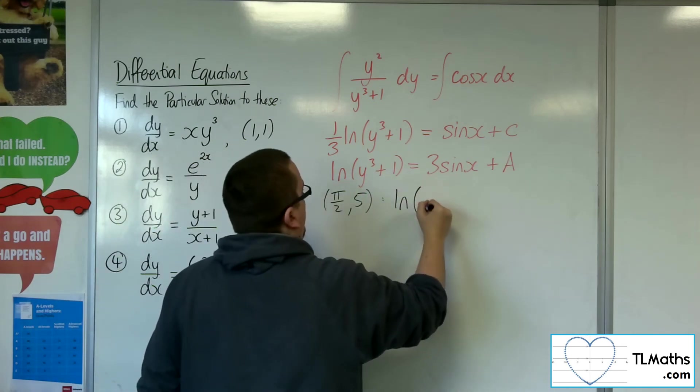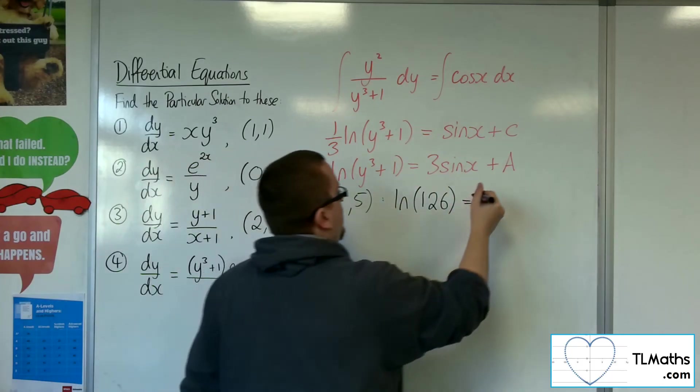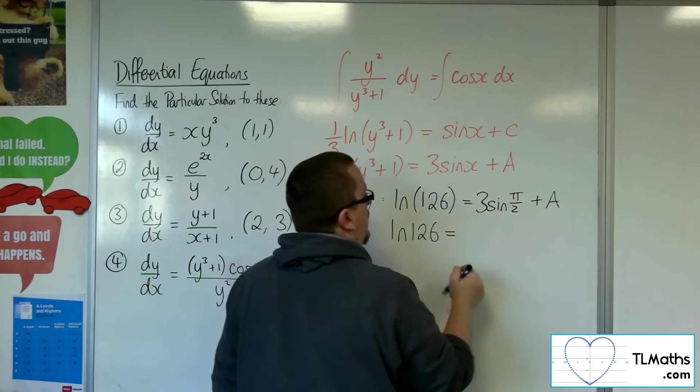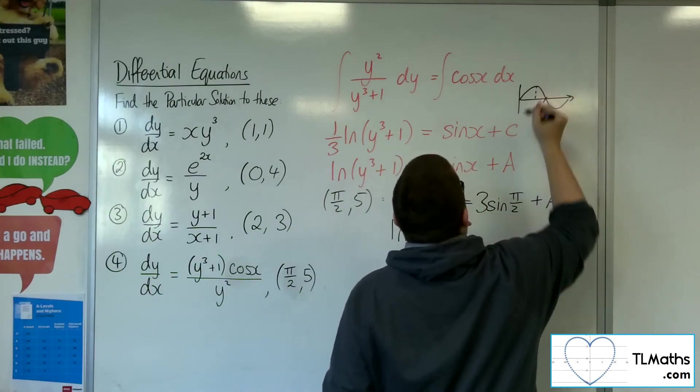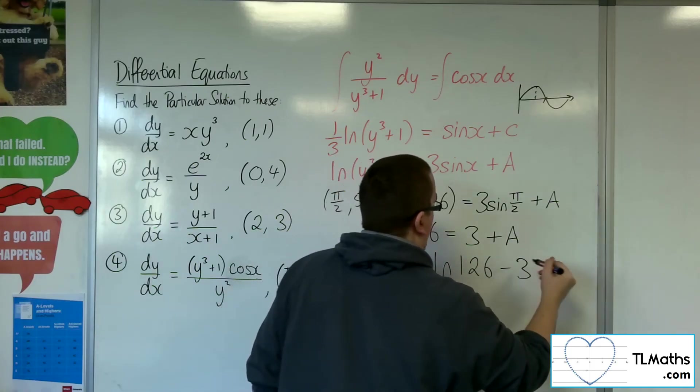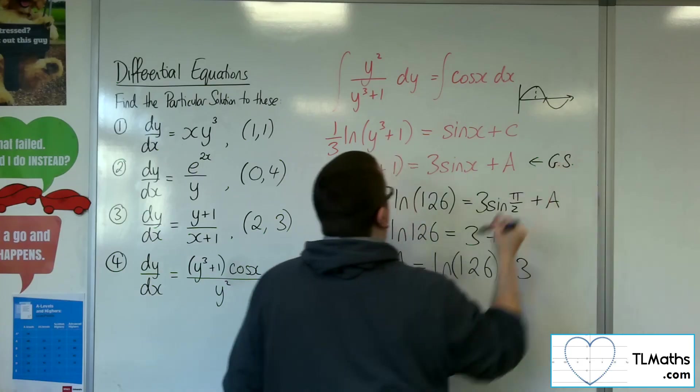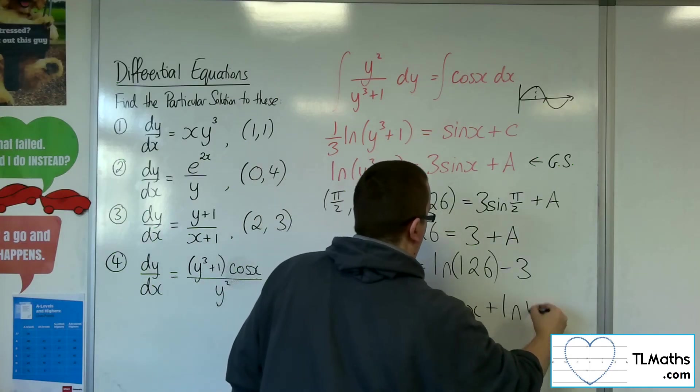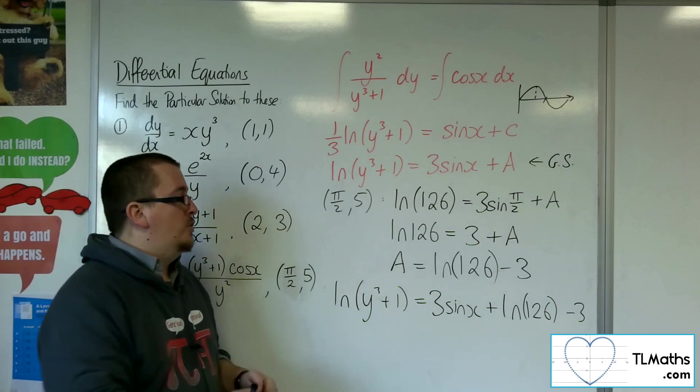So I'll have log of 5 cubed plus 1, so 126 is equal to 3 lots of sin of pi over 2 plus a. So that's log of 126. Now, sin of pi over 2, thinking about what sin looks like, pi over 2 is 1. So that's just 3. So a is log of 126 take away 3. Now, I can say, whereas that was my general solution, my particular solution will be log y cubed plus 1 equals 3 sin x plus log of 126 take away 3. That's my particular solution.